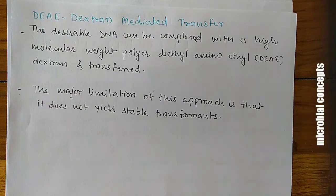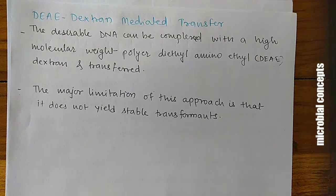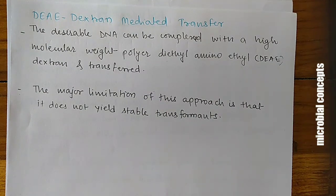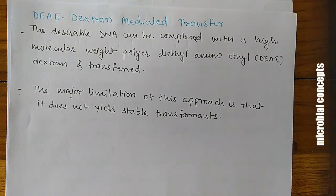Another chemical method is DEAE-dextran mediated transfer. The desired DNA is complexed with the high molecular weight polymer diethylaminoethyl (DEAE) dextran and transferred. The major limitation is that this approach does not yield stable transformants.